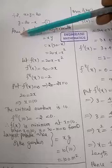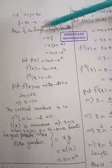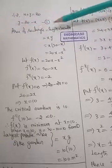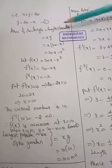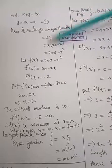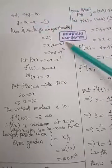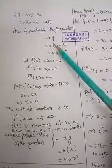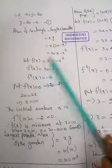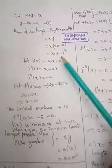Now the area is the function of the rectangle. The area of a rectangle is length into breadth, that is x into y, which equals x into (20 minus x). So, the area is 20x minus x squared. Let f of x equal to 20x minus x squared.